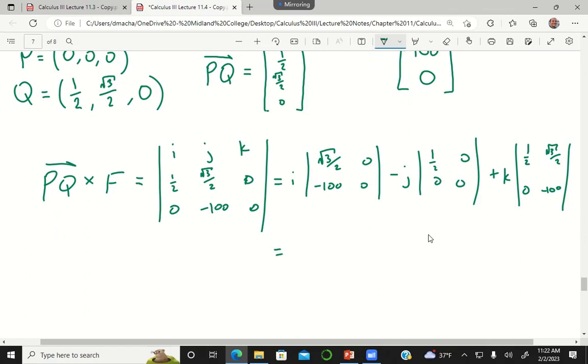Okay, what is that first determinant? It should be i times what? Zero. Yep. It should be root three over two times zero minus negative 100 times zero, so this is all zero. This is then minus j times what?